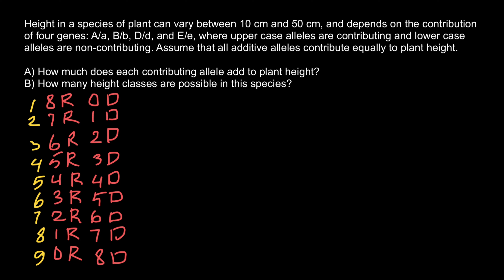For example, how tall is this plant going to be? When we have zero dominant alleles and all alleles are recessive, the height is going to be 10 centimeters. So this is the minimal set: 10 centimeters.